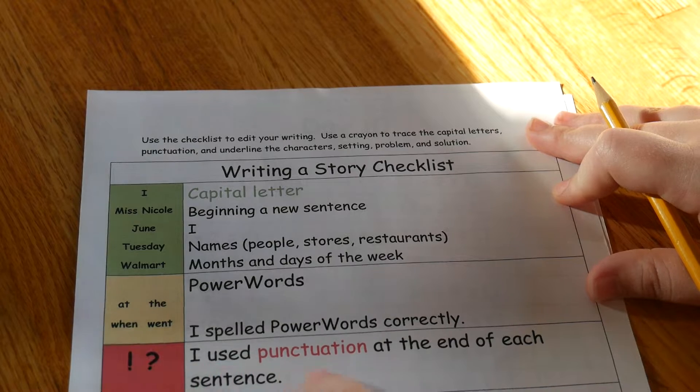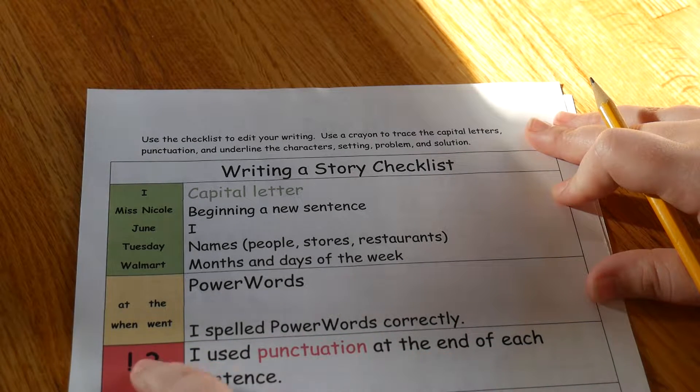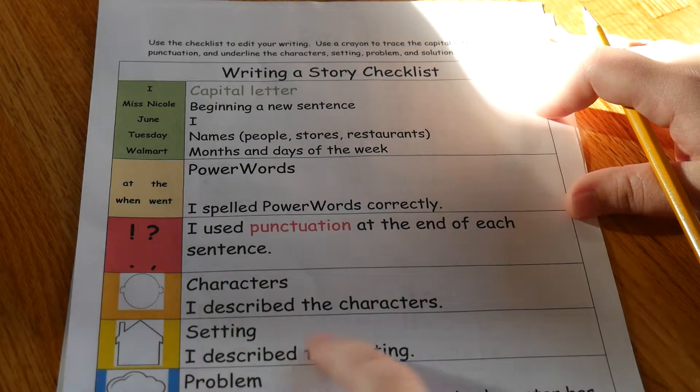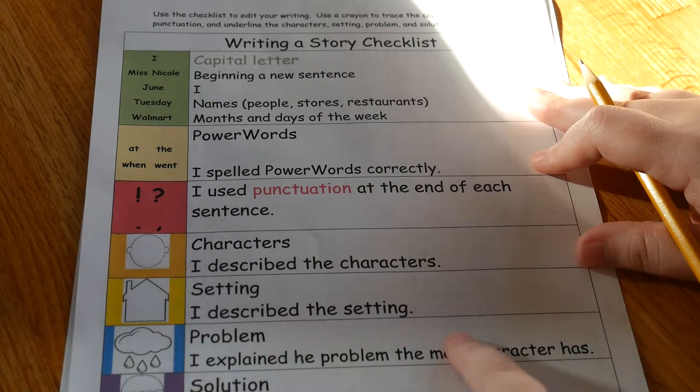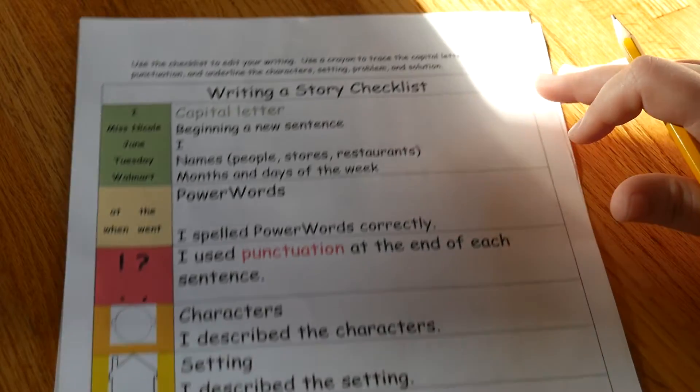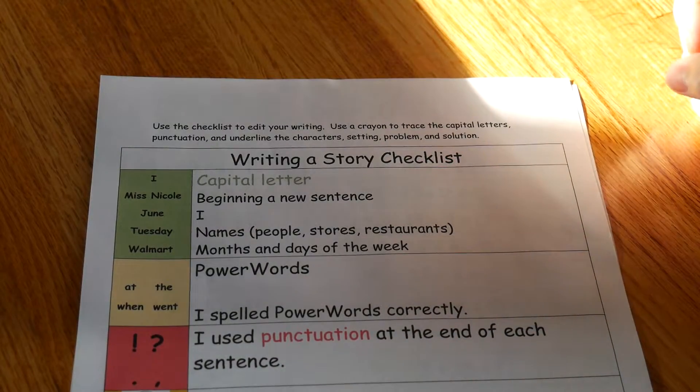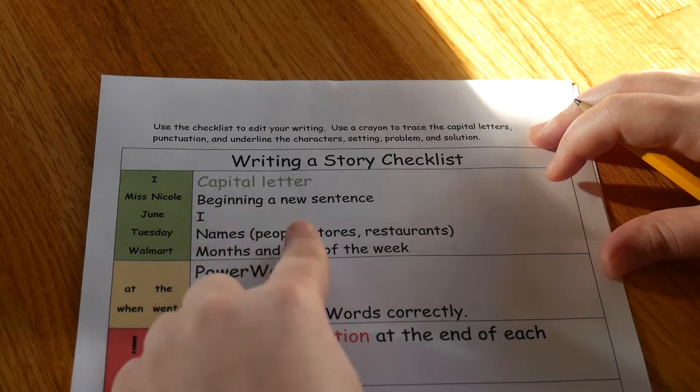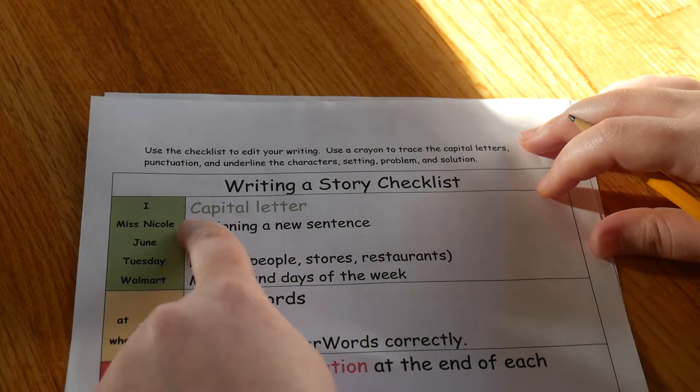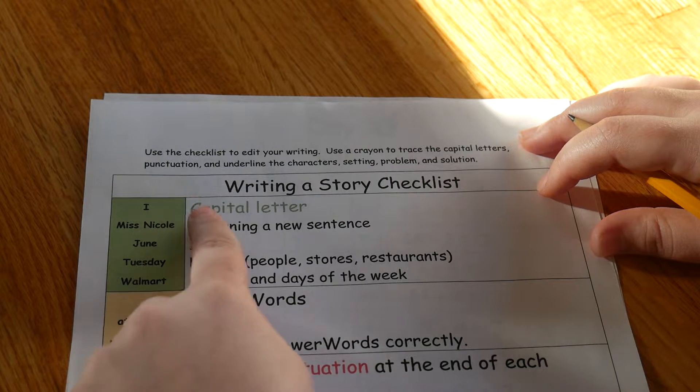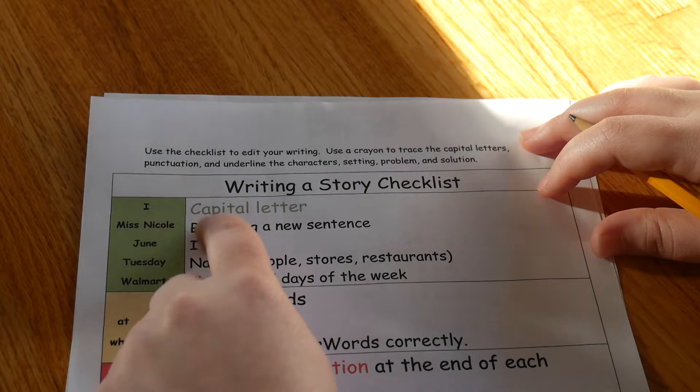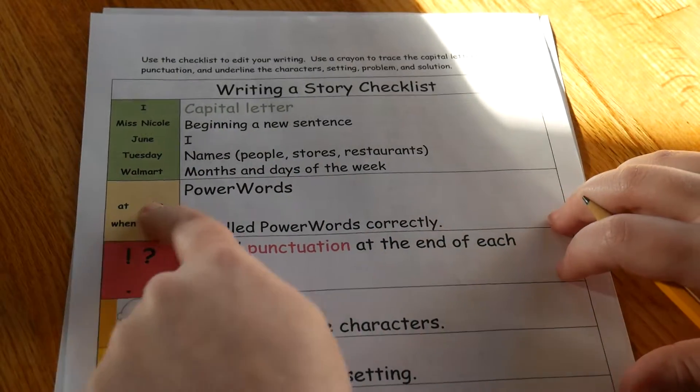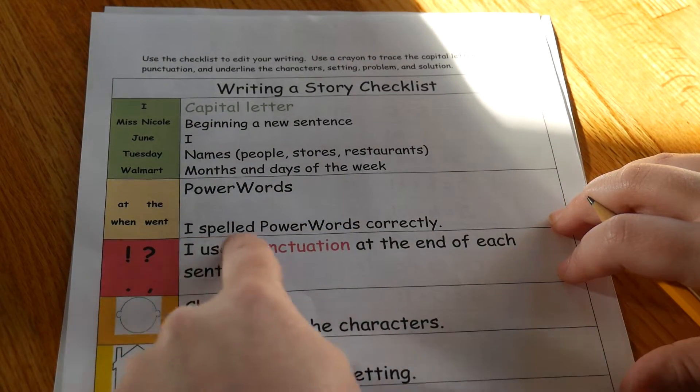And underline the characters, setting, problem, and solution. What you're going to do is look at all of your sentences and find the first word, make sure that first letter is a capital letter, and trace it in green. Then go through your story and check your power words—did I spell all of my power words correctly?